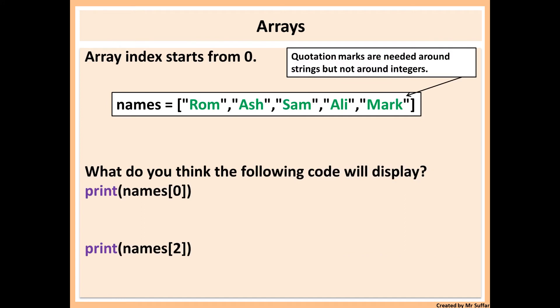This is how we can create an array in Python. We do that by using the square brackets and then we put what we want inside it. If we have numbers we don't need the quotation mark, but because this is a string, Rom, Ash, Sam, Ali, and Mark, they're all strings, we do need the quotation mark.